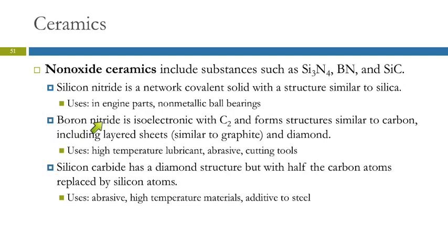Boron nitride is isoelectronic with C₂. Looking at the periodic table, boron and nitrogen are on opposite sides of carbon: carbon has four valence electrons, boron has three, nitrogen has five. Put together, they have the same number of electrons as two carbon atoms, so they can form structures similar to those carbon makes — including structures similar to graphite that are layered, and structures similar to diamond.